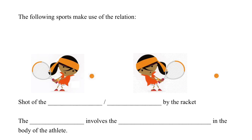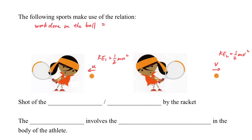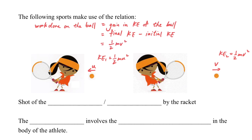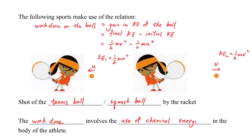Here is an example of tennis. Suppose a ball is flying to the player, and then the player hits it back again. So we will have the initial KE and the final KE. The ball will gain KE from the person, so the gain in KE will be the final KE minus the initial KE, which is KE2 minus KE1. Because energy is a scalar, we need not consider direction. The work done here involves the chemical energy of the person.